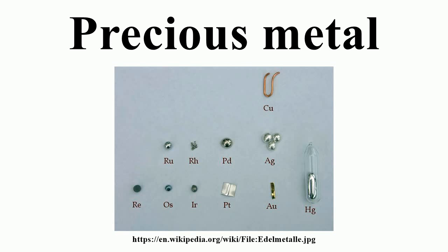Many nations mint bullion coins. Although nominally issued as legal tender, these coins' face value as currency is far below that of their value as bullion. For instance, Canada mints a gold bullion coin at a face value of $50 containing one troy ounce of gold. As of May 2011, this coin is worth about $1,500 Canadian dollars as bullion. Bullion coins minted by national governments give them some numismatic value in addition to their bullion value, as well as certifying their purity.